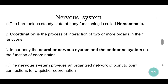Hi Viewers! Today we are going to see about Nervous System GK. Nervous System Complete General Knowledge Questions is given for you for all kinds of competitive exams. The harmonious steady state of body functioning is called homeostasis. Coordination is the process of interaction of two or more organs in their functions.